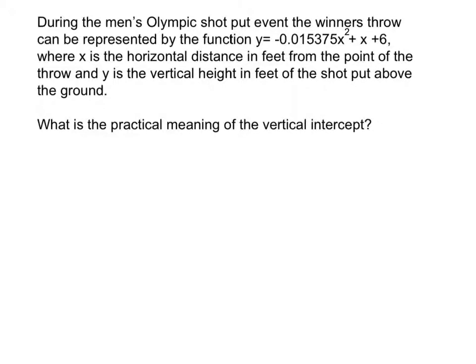On this one we're dealing with a real-life scenario, and this particular one is dealing with the shot put for the Olympic men's shot put. And it provides us the equation, and the equation is right here. y equals negative 0.015375x squared plus x plus 6.